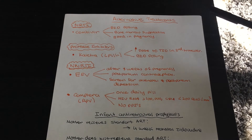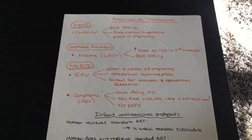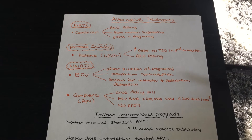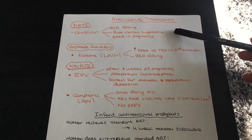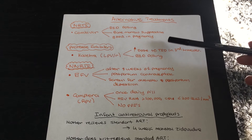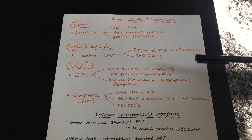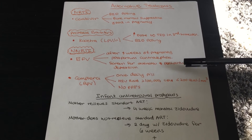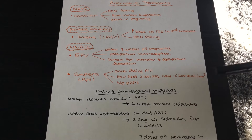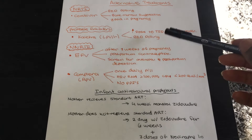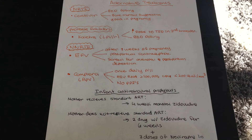Moving into alternative treatments, under the NRTI class we have Combivir, which contains zidovudine with lamivudine. It requires twice-daily dosing and you must be careful of bone marrow suppression from the zidovudine component, though it is well-experienced in pregnant patients. Under protease inhibitors, we have Kaletra, also known as lopinavir with ritonavir, also twice daily. In the third trimester of pregnancy, the dose must be increased to three times a day.